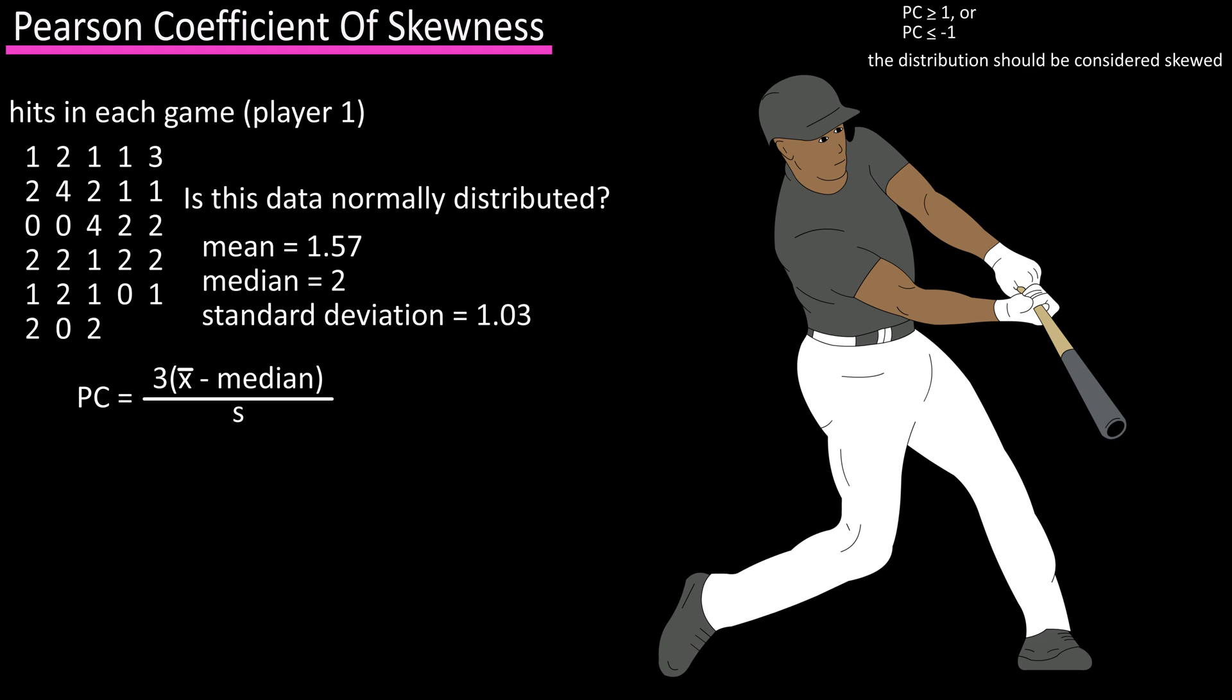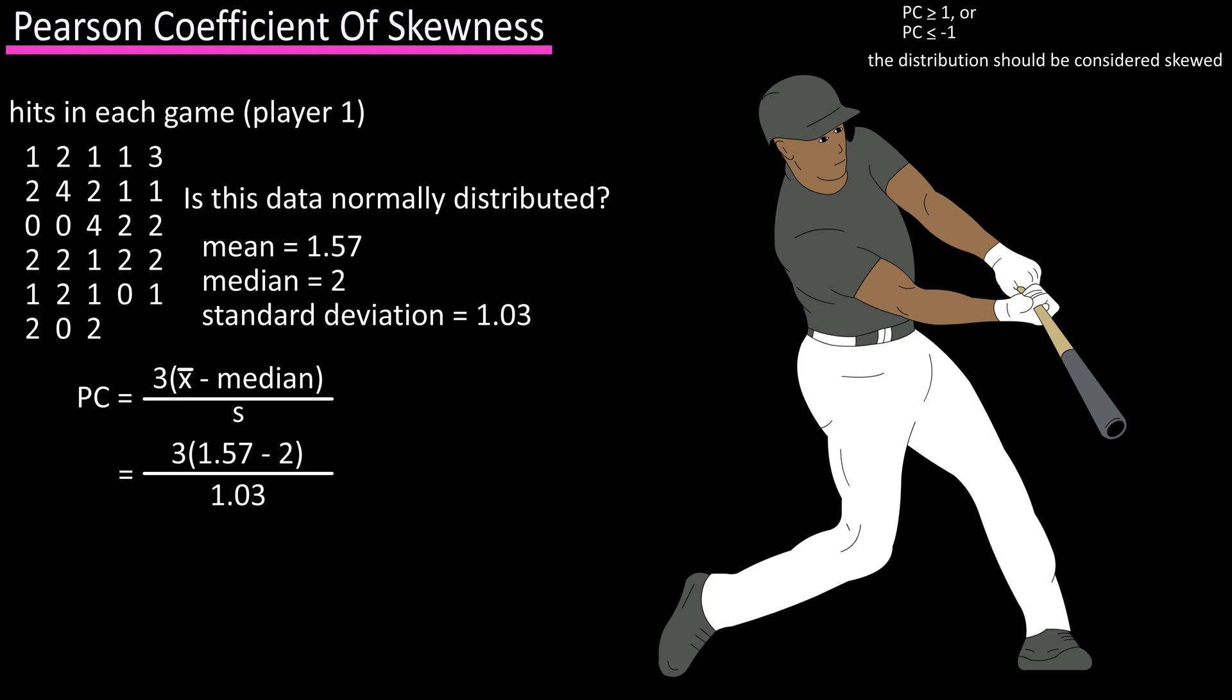Using the formula we have pc equals three times the quantity 1.57 minus 2 divided by 1.03, and this result equals negative 1.24. Since negative 1.24 is less than negative 1, we would conclude that this data set is negatively skewed.